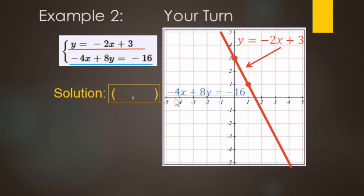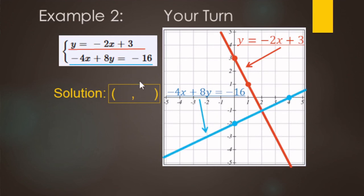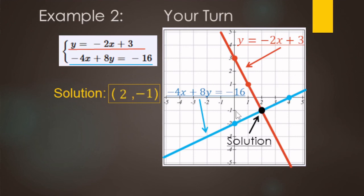The bottom equation is in standard form. For the x-intercept, divide negative 16 by negative 4, which gives positive 4. For the y-intercept, divide negative 16 by 8, which gives negative 2. Draw that line. The solution where both lines intersect gives x = 2 and y = negative 1.